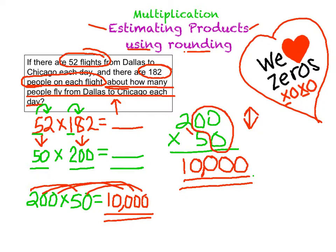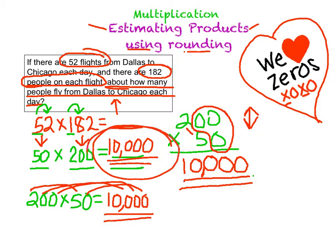So my answer to about how many people fly from Dallas to Chicago each day is 10,000. That's it.